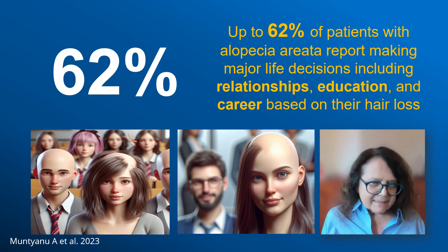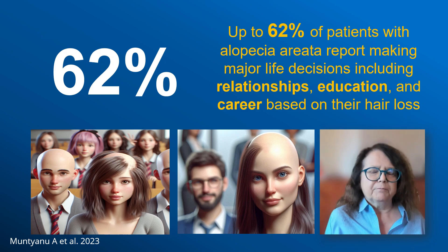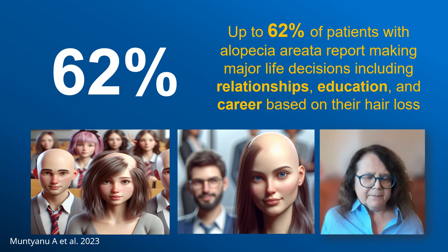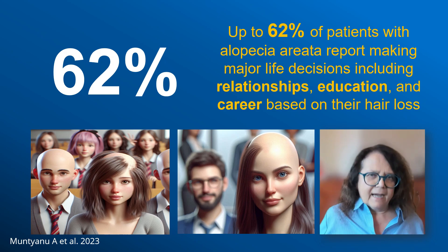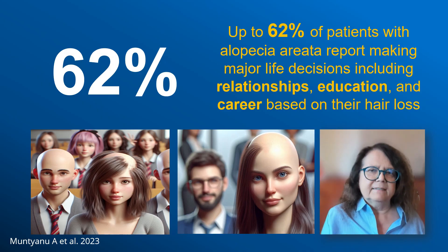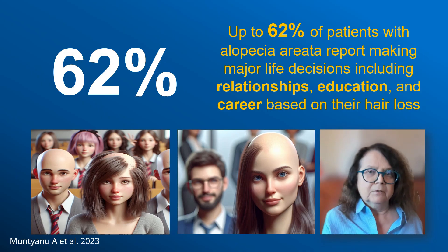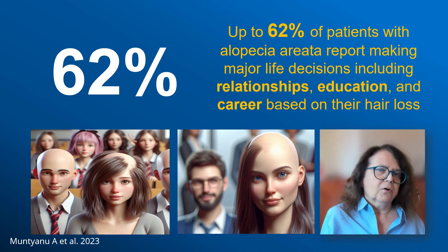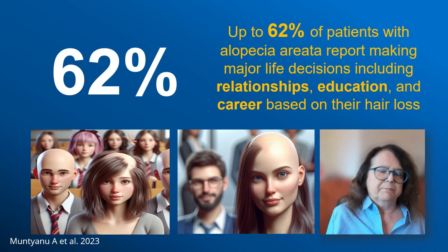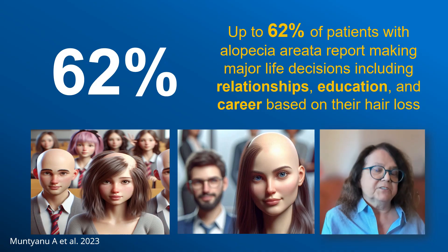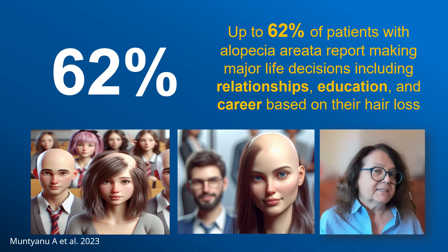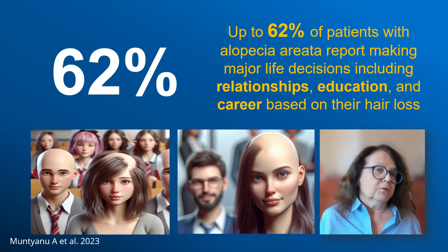62% of patients with alopecia areata say that the disease has a significant influence on their everyday decisions — starting from small decisions such as going to see friends or attending a party, to major life decisions such as deciding about a job, about school, but also deciding about private relationships.